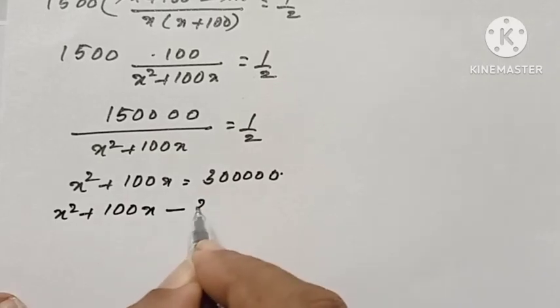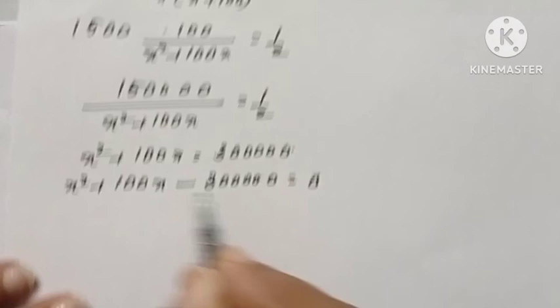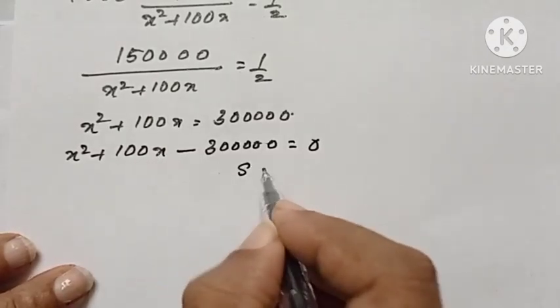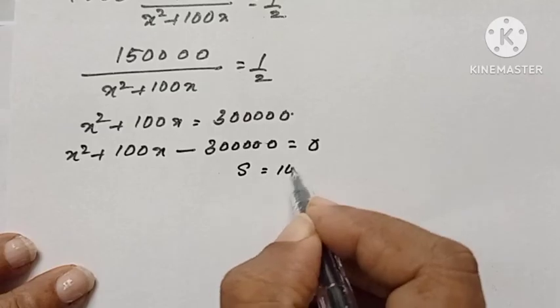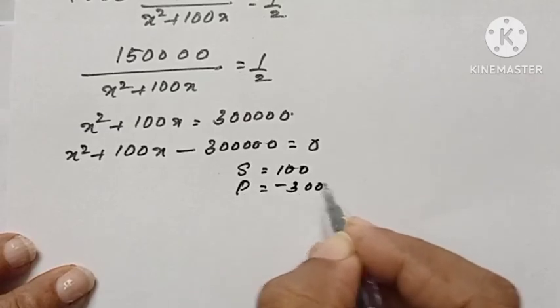x squared plus 100x minus 3 lakh equal to 0. Now we got a quadratic equation. Splitting the middle term, sum is equal to 100, product is equal to minus 3 lakh.